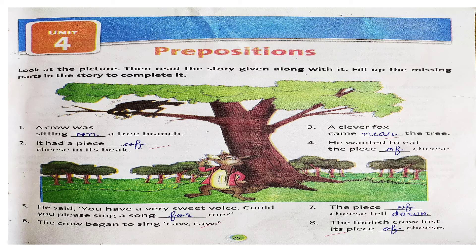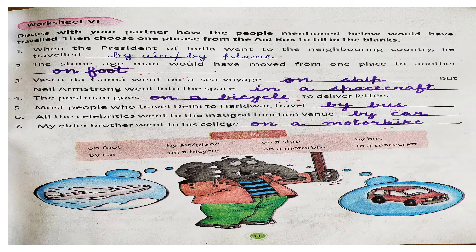Jo hum apne pichle videos mein discuss kar chukke hain — preposition of time kya hota hai, preposition of place kya hota hai, preposition of movement ya direction kya hota hai. Ab hum kya kareenge? Hum beech ki worksheets, till Worksheet 5, yeh hum nahi kareenge. We will directly come to Worksheet 6. Isme kya karna hai? We have to fill in the blanks. Yeh aid box humne niche rakha hai. Lekin dear children, isme meh aapko ek cheez clear karna chahati hoon. Hum by, on, in — yeh mainly teen prepositions hain jo yahaan istimal ki ja rahi hain.